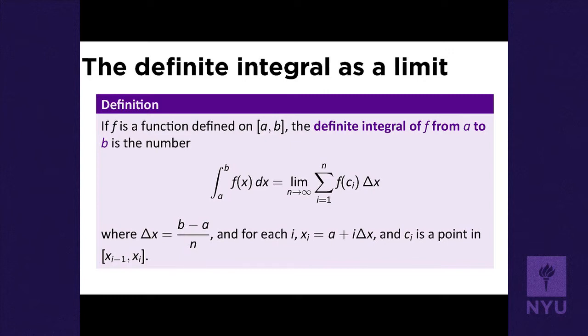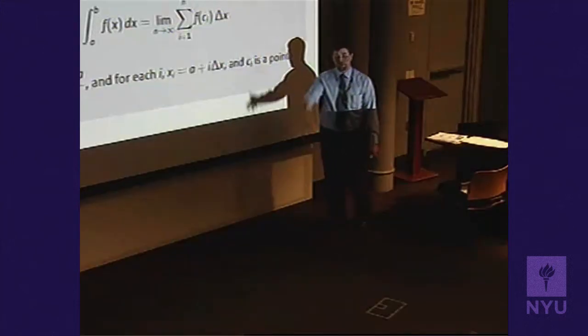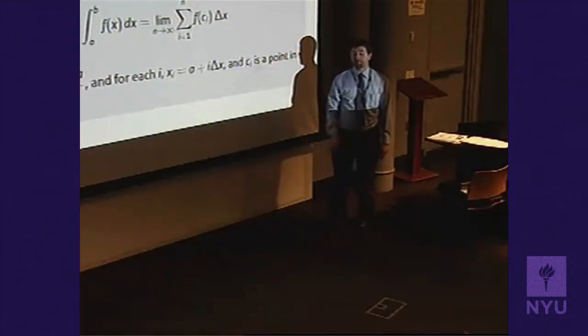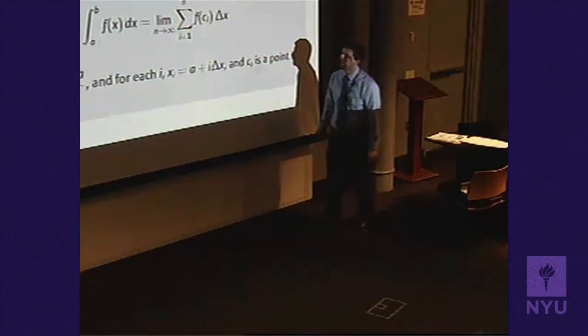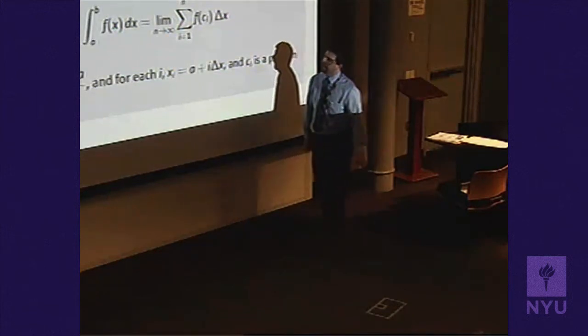Each Riemann sum is a sum of products of function values times intervals in x — a limit of sums of areas of rectangles. What we hope is that it has a limit: the area under the graph of f(x) above the x-axis between the vertical lines x = a and x = b.